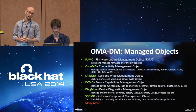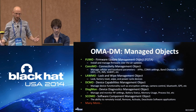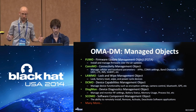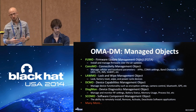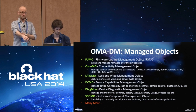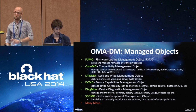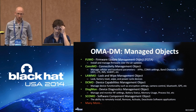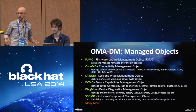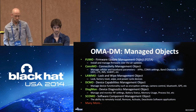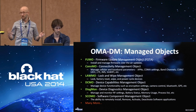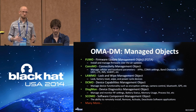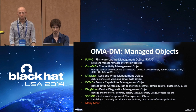In OMA Device Management, we have what are called management objects, which provide different feature sets. The carriers will say they want X, Y, or Z. Some interesting ones we've seen include FOTA — standard firmware over-the-air management. If you're running Android via a carrier-provided device and you do a firmware update, if it's not going over Google's OTA, which most aren't, it is probably going over OMA DM. Then we also have CONMO, which allows carriers to remotely reconfigure basic network settings, things like APNs.